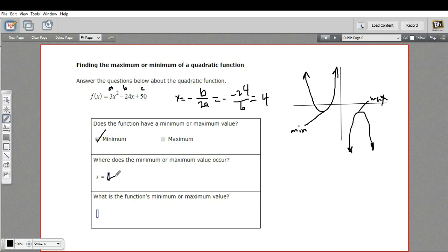So the vertex occurs at an x value of 4, and then to find the other coordinate, which is the function's value at that minimum, all we have to do is take 4 and plug it in for x. So let's go ahead and do that.